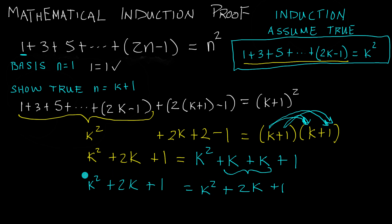Now we have completed the mathematical induction proof. We have proved that 1 plus 3 plus 5, plus 2 times n minus 1, is equal to n squared, and we did that by mathematical induction. Thank you guys for watching, have an excellent day, and if you haven't already, don't forget to subscribe!